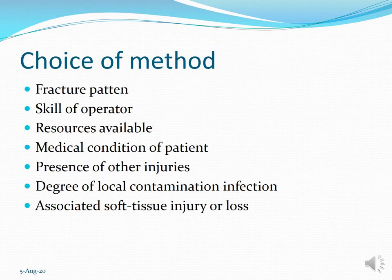How do you choose among these various methods? Major determining factors include the fracture pattern, skill of the operator, resources available — a peripheral center may not have a plating kit — medical condition of the patient deciding open versus closed method, presence of concomitant injuries, local contamination or infection, and associated soft tissue loss. These factors determine how extensive the treatment will be.